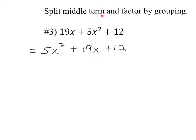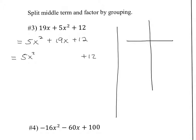Next step is to split the middle term. The first term doesn't change, the last term doesn't change, but the middle term of 19x gets split into two separate terms. Those split terms should add together to be 19x and should multiply to be whatever 12 times 5x squared is. Let's make a little table off to the right. We need two numbers that multiply to get 5x squared times 12, and those same two terms add up to be 19x. 5 times 12 is 60, so we're multiplying to get 60x squared and adding to get 19x.